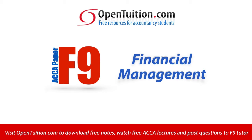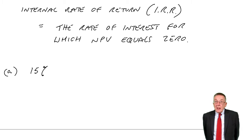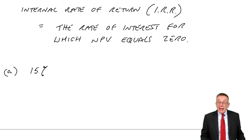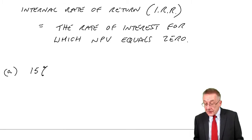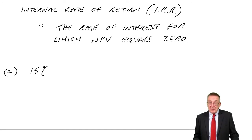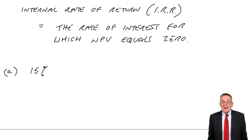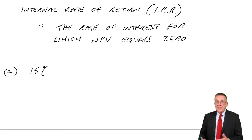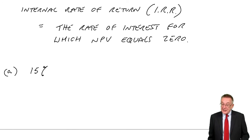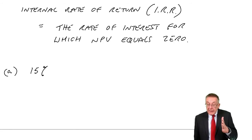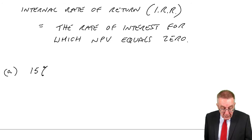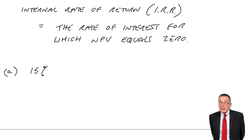This is a lecture from Open Tuition. To benefit from the lecture, you should download the free lecture notes from opentuition.com. We're working through chapter 7 of the free lecture notes. I'm effectively revising paper F2, going through the various mechanics of discounting. At the end of the last lecture, I suggested that you had a go at part A of example 3.